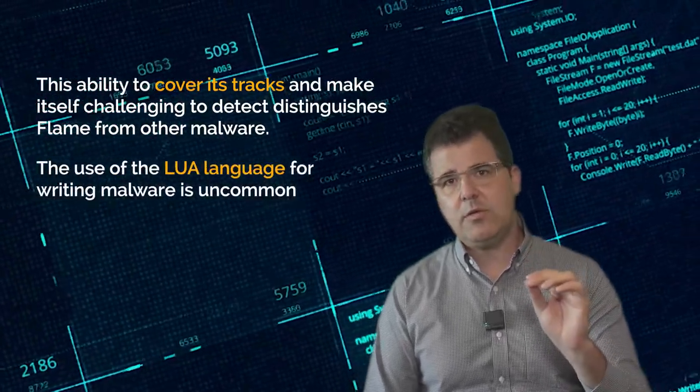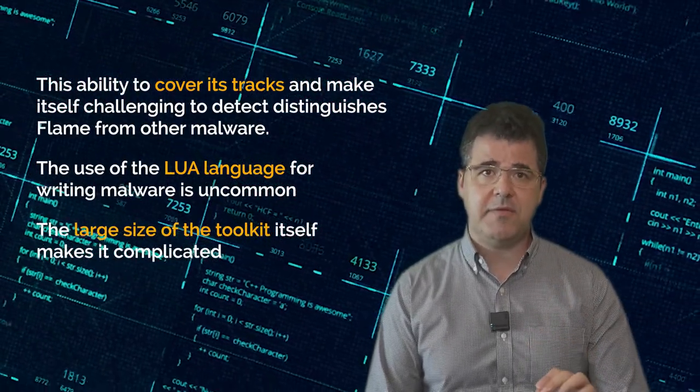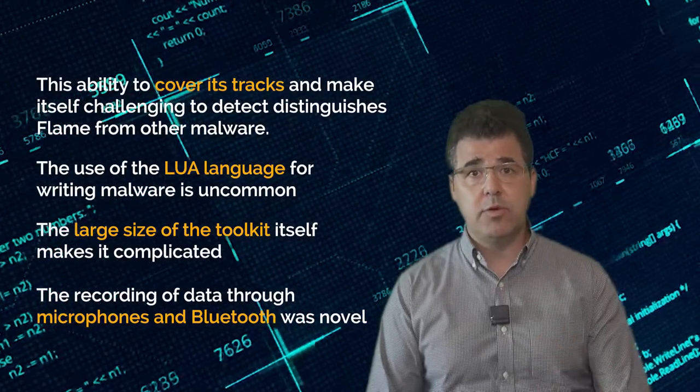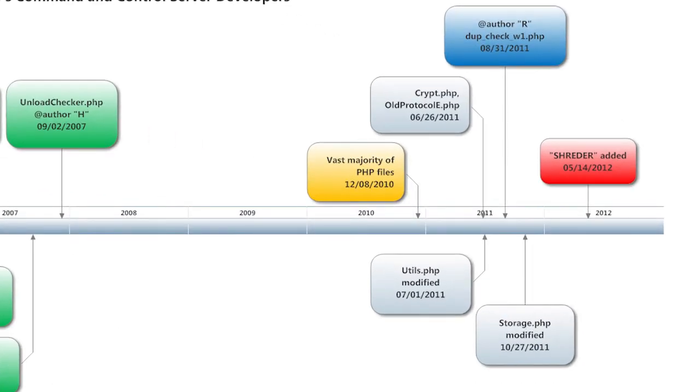Iranian news reports indicated that the Viper program infecting their oil company machines was designed to delete massive volumes of data from infected systems. However, Kaspersky examined one such system and did not find any trace of Flame malware on the disk. The ability to cover its tracks and make itself challenging to detect distinguishes Flame from other malwares. The use of the LUA language for writing malware is uncommon. The large size of the toolkit itself makes it complicated. The recording of data through microphones and Bluetooth was novel. Flame's creators were clever hackers who changed the file creation dates to prevent any investigator from establishing the true time of creation.